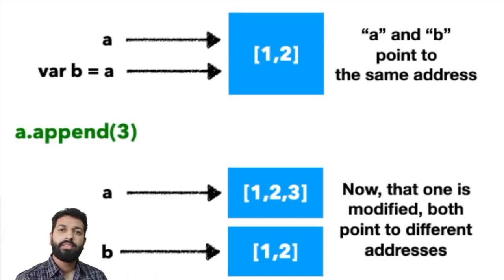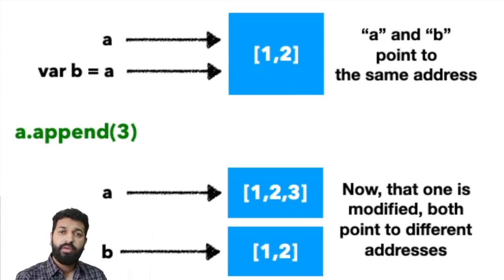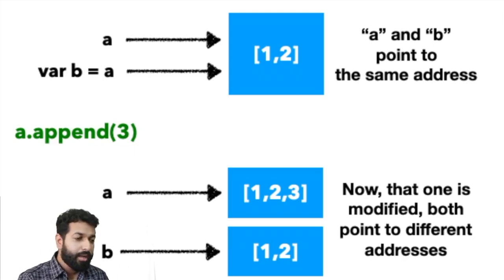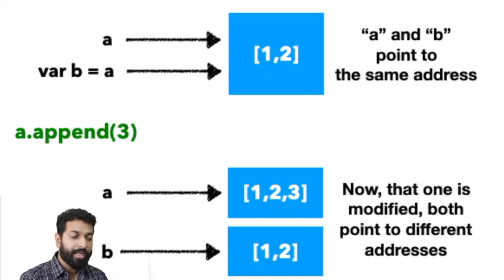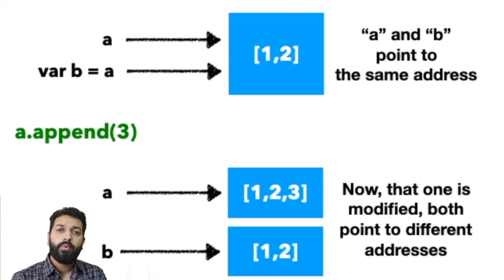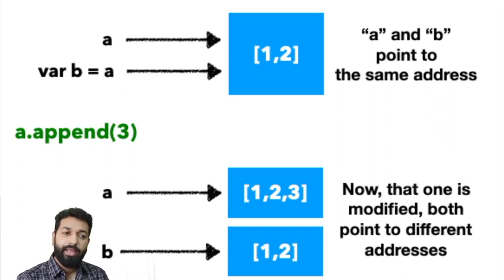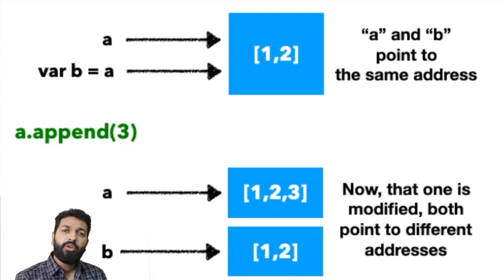In a programming context, when an object is created and assigned to a variable, and then that variable is assigned to a different variable, both variables will point to the same object unless mutation is required. So here both A and B are pointing to the same memory location, having the values 1 and 2. A copy of this object will be created only when a write operation is needed — so when A asks for appending the element 3, a copy is created.